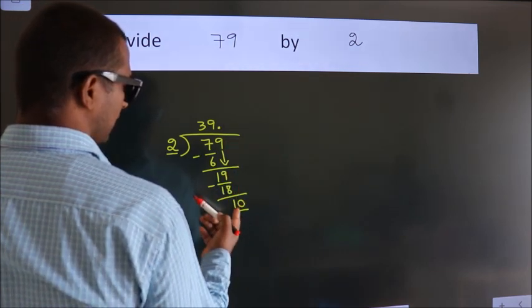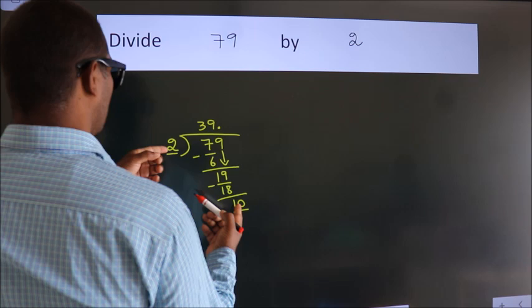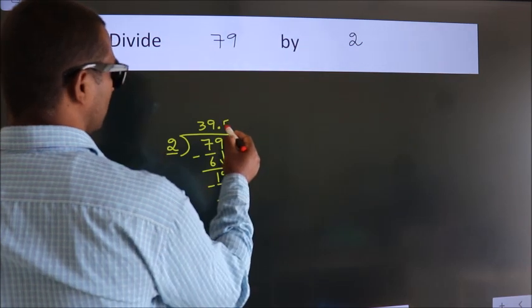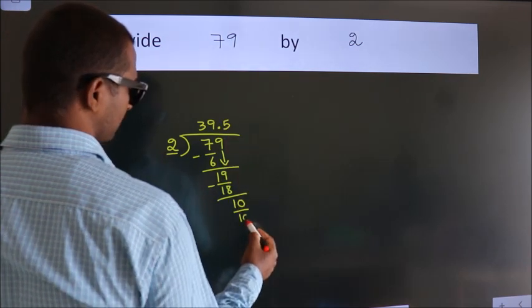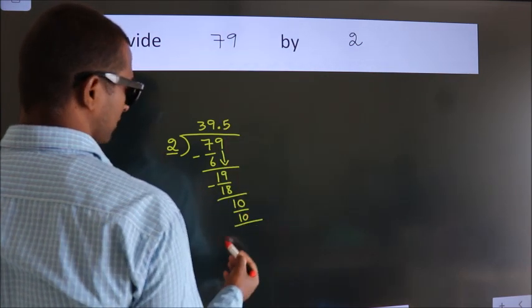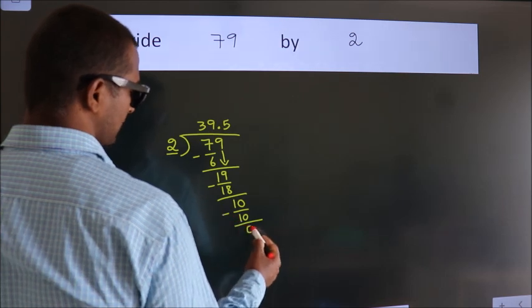So 10. When do we get 10? In 2 table, 2 fives, 10. Now we subtract. We get 0.